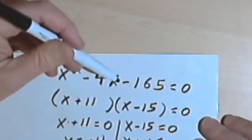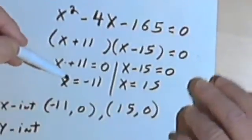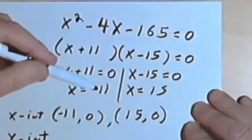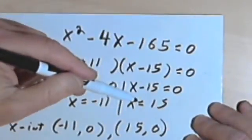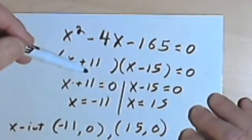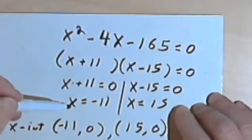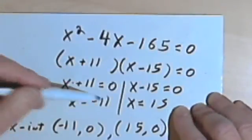And I end up finding out that x equals negative 11 and x equals 15. Okay, so you know this process. Well remember, when I say x equals negative 11 and x equals 15, those are going to be the x-intercepts on the graph.